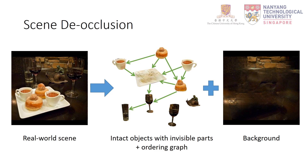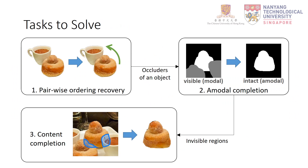Scene deocclusion decomposes a real-world scene into intact objects with invisible parts in the background. The objects are organized by an ordering graph, and the edges of the graph indicate the occlusion directions. The scene deocclusion problem can be broken down into three subtasks: first, we recover the ordering between occluding object pairs; next, with recovered ordering, we obtain the occluders of an object, which facilitates amodal completion — predicting the intact mask of an object given its occluders. Finally, the intact amodal mask contains invisible regions of an object.